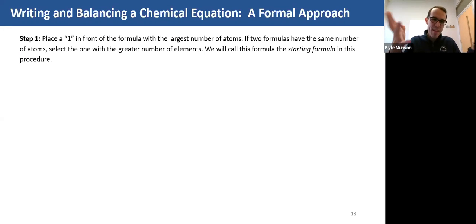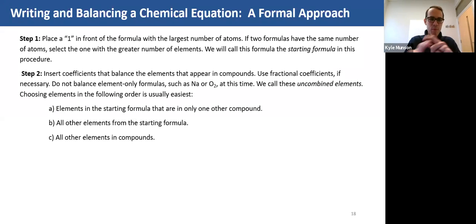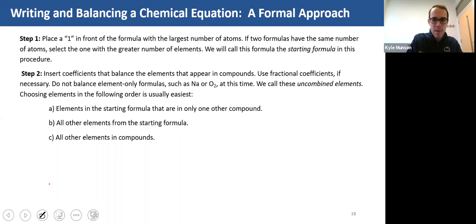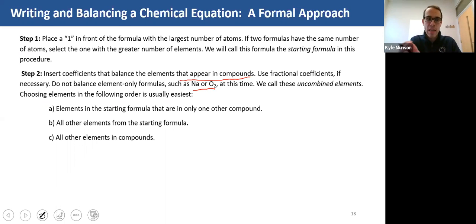Step one: place a one in front of the formula with the largest number of atoms. If two formulas have the same number of atoms, select the one with the greater number of different elements. Step two: insert coefficients that balance the elements that appear in compounds. You want to balance elements that appear in compounds before you balance elements that are by themselves. You can use fractions if necessary. Don't balance element-only formulas such as sodium or oxygen at this time — those are uncombined elements and you're going to do them last. That's going to make life a lot easier.